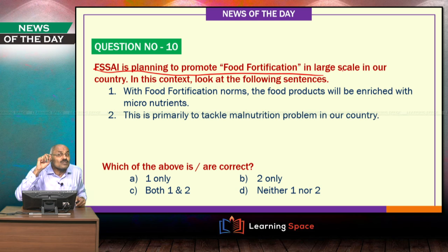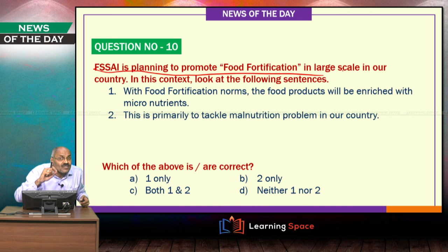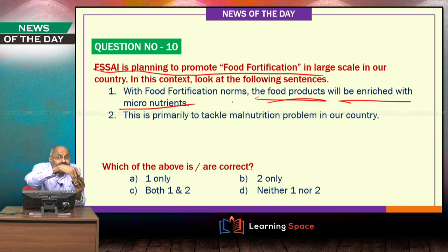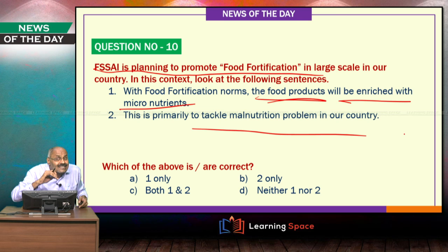FSSAI is planning to promote food fortification on a large scale in the country. Food fortification means the food products will be enriched with micronutrients — vitamins and minerals — artificially added to whatever food products we are purchasing. This is basically to take care of the malnutrition problem in our country. Food fortification is the practice of enriching food products with micronutrients.